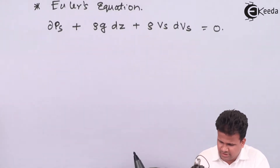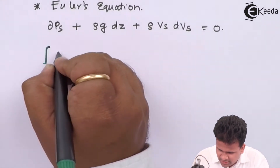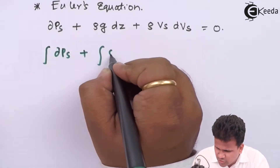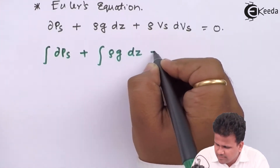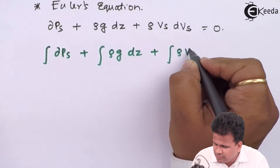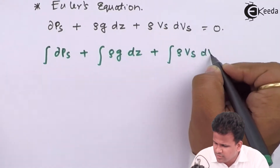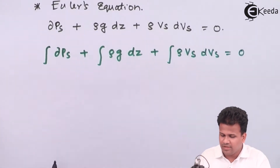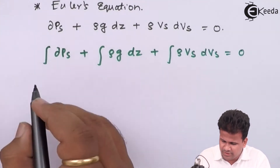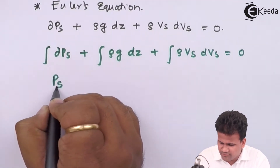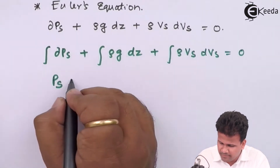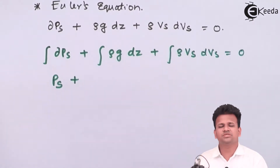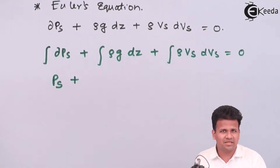Now, if we integrate this equation, we get: integral of dP + integral of ρg·dz + integral of ρV·dV = 0. When we integrate this, we get the pressure term. Since ρ and g are constant — ρ is constant because it is an incompressible flow —